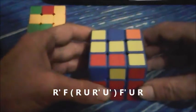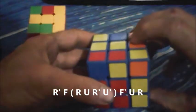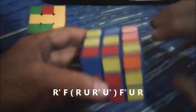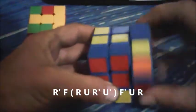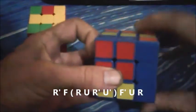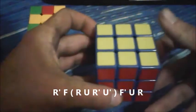The algorithm goes R prime, then this case: F, R, U, R prime, U prime, F prime, then U, R.